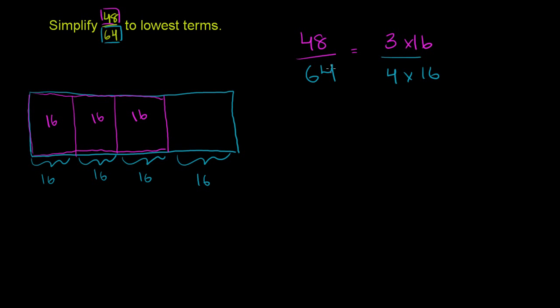So what is 48 over 64 in lowest terms? If we want to write this as a simple possible fraction. Well, if we make each of the pieces equal to 16 of our old pieces, if we make this into one piece, we turn 16 into 1, then we are talking about, instead of 48 over 64,